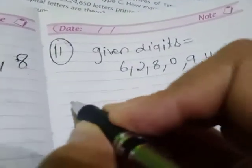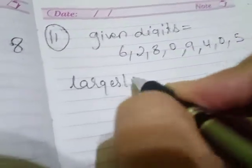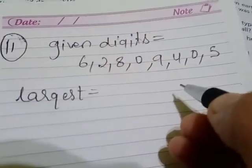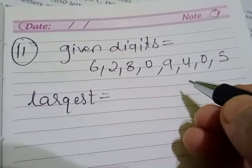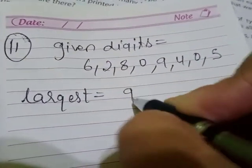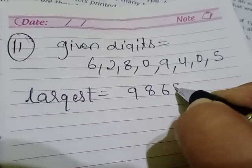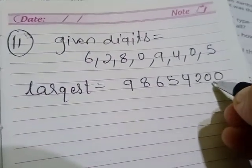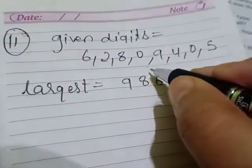First I'll make the largest number. To make the largest number, we arrange the given digits from greatest to smallest: 9, 8, 6, 5, 4, 2, 0, 0.